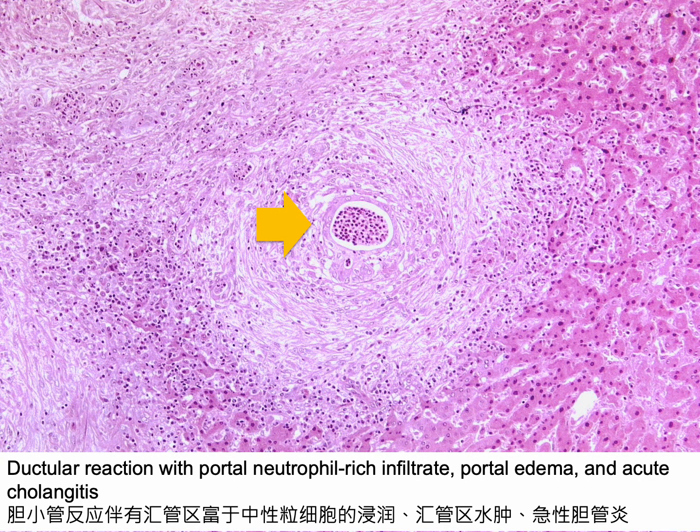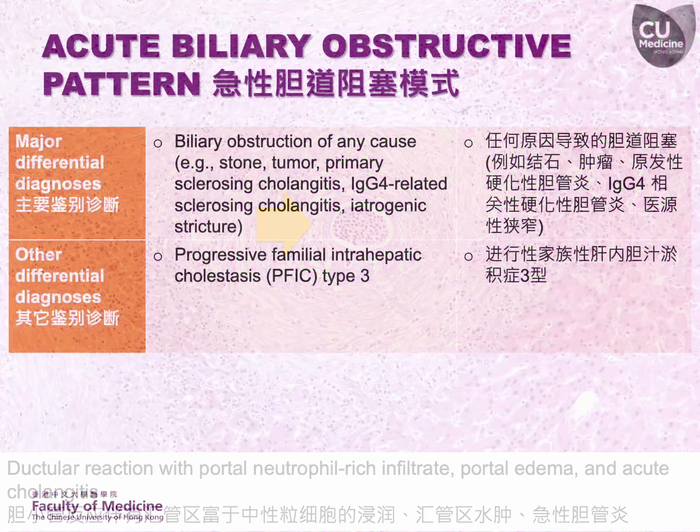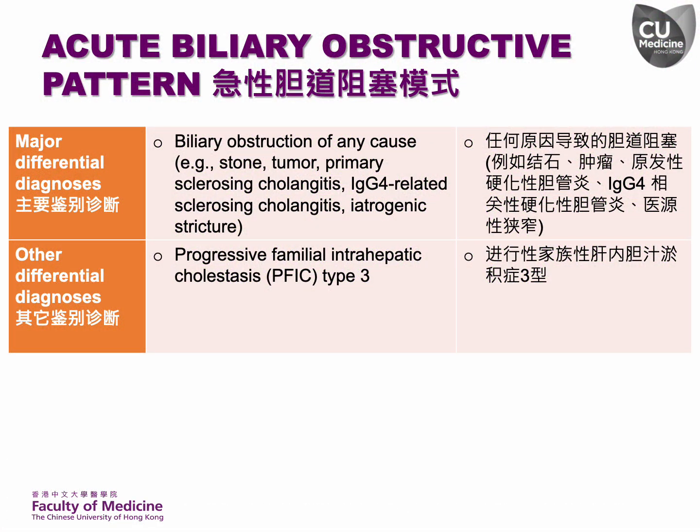Typical histological features of acute biliary obstruction are demonstrated in this excisional specimen from a patient with perihilar cholangiocarcinoma. This histological pattern is clearly indicative of acute biliary obstruction, regardless of the cause. However, progressive familial intrahepatic cholestasis PFIC type 3 should also be considered, particularly in older children, teenagers, and even young adults.